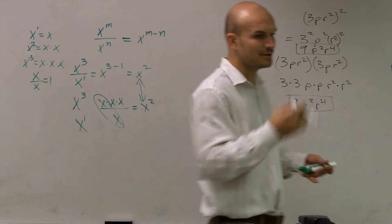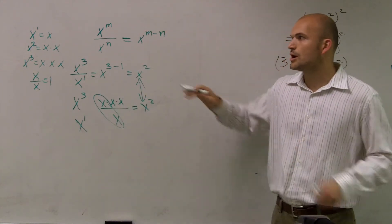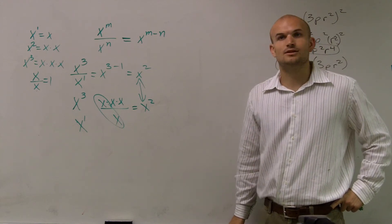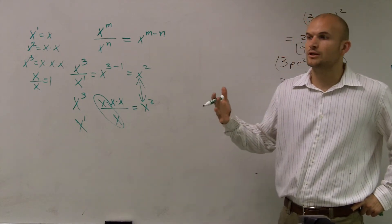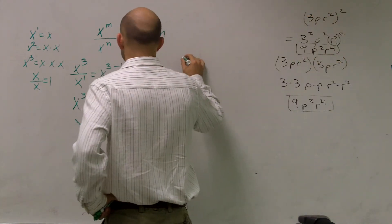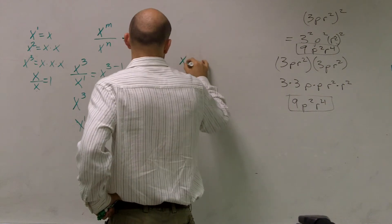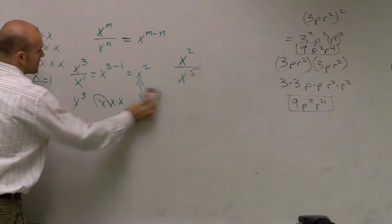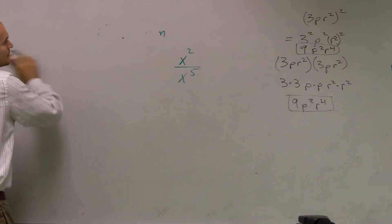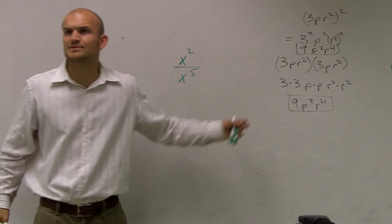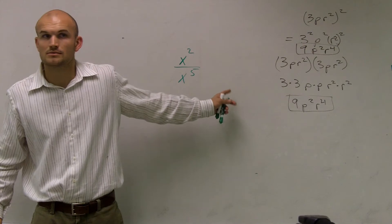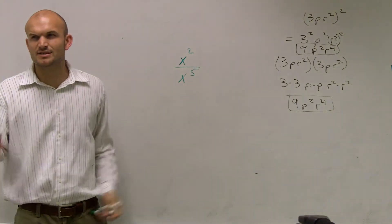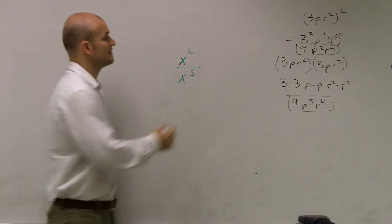So I wanted to review that with you. But the main thing I really want to address is: what happens when we subtract a number that is larger than the number on top? What happens when we subtract a larger number from a smaller one? So what happens if we have x squared divided by x to the fifth? What's 2 minus 5? It's going to give us a negative number.